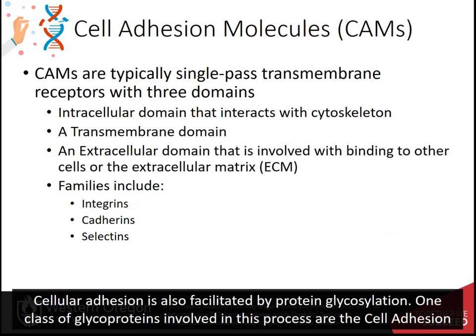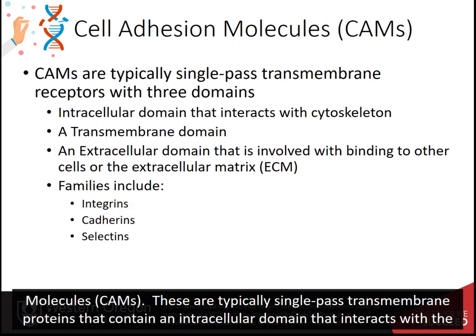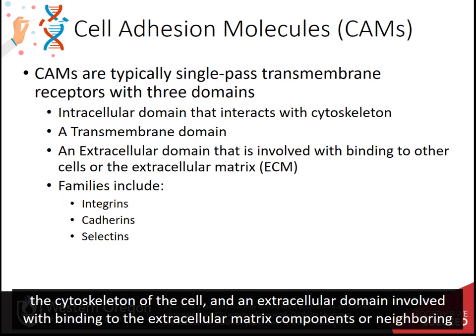Cellular adhesion is also facilitated by protein glycosylation. One class of glycoproteins involved in this process are the cell adhesion molecules, or CAMs. These are typically single-pass transmembrane proteins that contain an intracellular domain that interacts with the cytoskeleton of the cell and an extracellular domain involved with binding to the extracellular matrix components or neighboring cells.